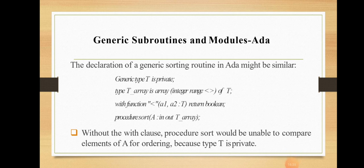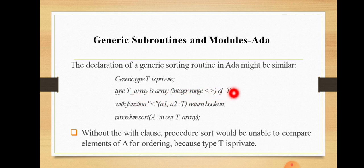In other languages, we declare and use generic subroutines similarly. For example, the declaration of a generic sorting routine in Ada might use: generic type T is private; type T_Array is array; integer range of T, with a function comparing elements. That's all for this topic.